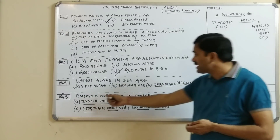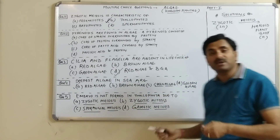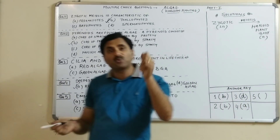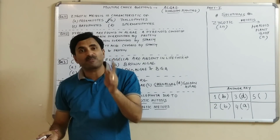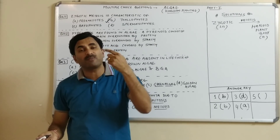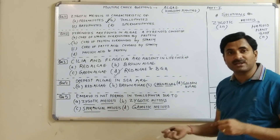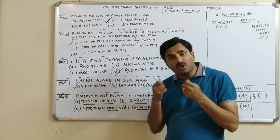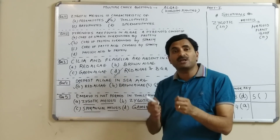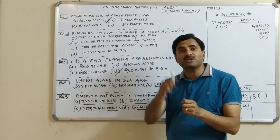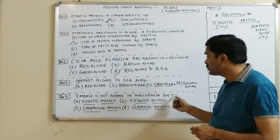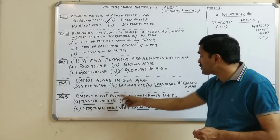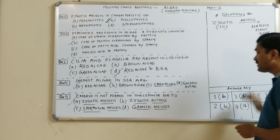Question number five: embryo is not formed in thallophytes due to what reason? As discussed in question one, zygotic meiosis occurs in thallophytes, and due to zygotic meiosis the zygote does not form the embryo — it forms the haploid plant body instead. In higher plants the zygote undergoes mitosis to form the embryo. The embryo is not formed in thallophytes because the diploid zygote undergoes meiosis rather than mitosis. The options are zygotic meiosis, zygotic mitosis, or gametic meiosis — and the answer is A, zygotic meiosis.